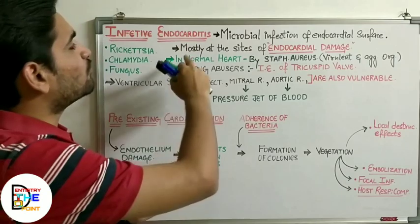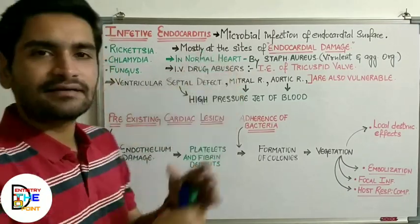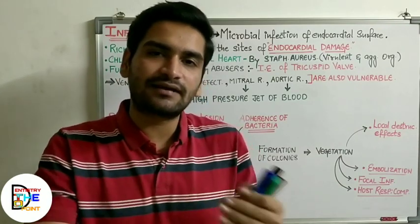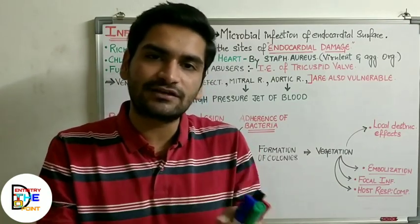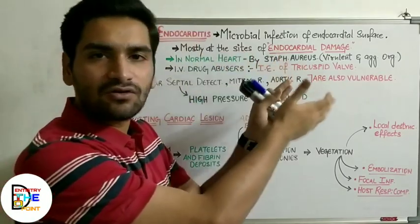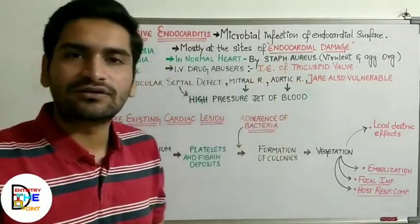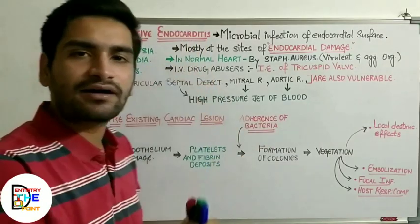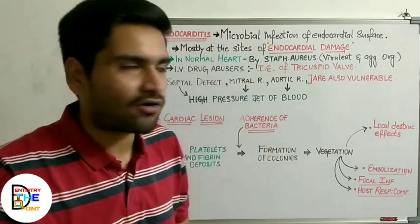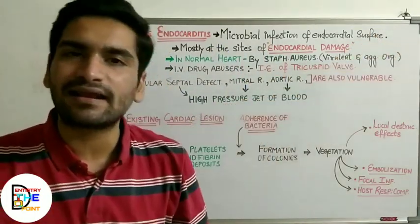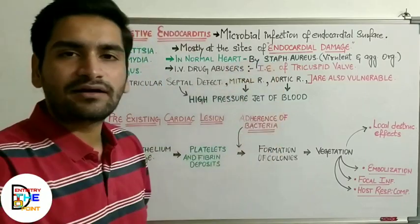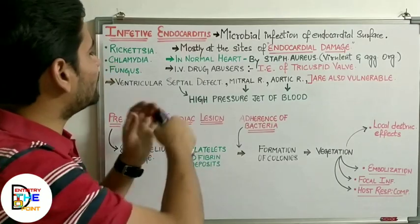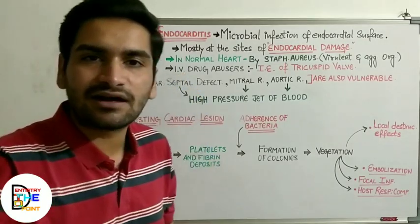Infective endocarditis mostly occurs at the site of endocardial damage. Wherever there is damage to the endocardium, microorganisms reach through the blood, colonize, and form their colonies there, then show their virulent effects. In a normal heart, infective endocarditis can be caused by Staphylococcus aureus, which is a very virulent and aggressive organism entering through the blood.